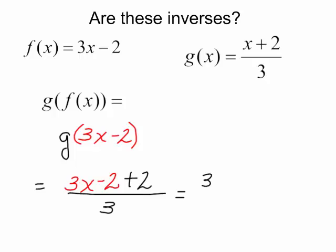In the numerator, we will have 3x. In the denominator, we will just have 3. The 3s will cancel. My answer is x.